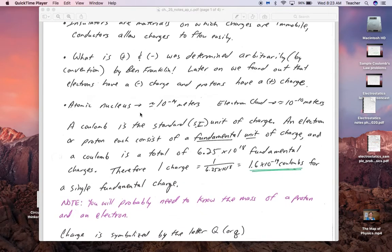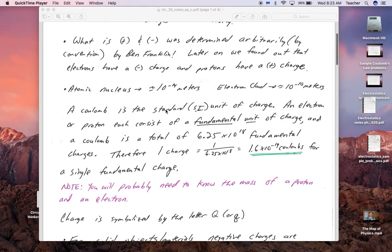If you become positive, that's because of a loss of negatives. The nucleus is about 10 to the negative 14 meters across. The electron cloud is about 10 to the negative 10th meters across, so that means an electron is about 10 to the negative 10th meters away from the nucleus or any protons in the atom.